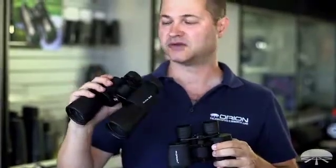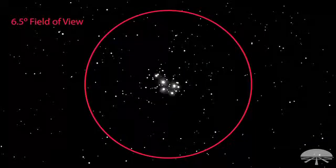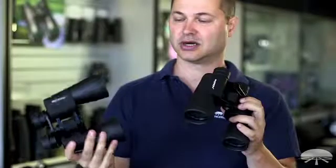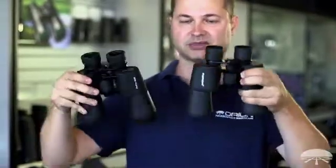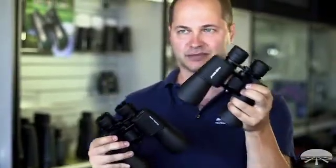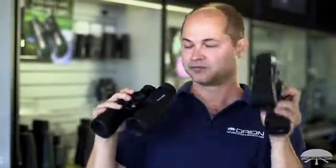This one, the UltraView 10x50, has a 6.5 degree field of view. I hear a lot of people say the 50mm lens is what tells you the differences in the field of view — actually no, that's what tells you how much light they let in. So they're both 50mm so they're going to be about the same size. But this being 7 power, I'm stepping back and getting a wider field of view, and with a 10 power I'm zooming in and getting a little bit narrower field of view. So there is a trade off there.